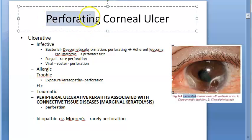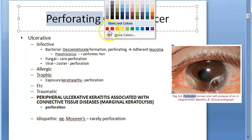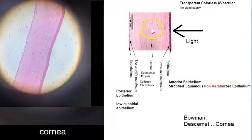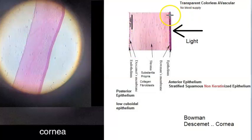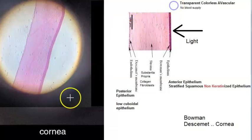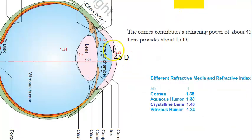In this video, let us look at perforating corneal ulcer — a corneal ulcer that has perforated. This is the cornea with all its layers shown here. There was an ulcer in the cornea — a break in the epithelium with underlying necrosis — and now this ulcer has become so deep that it has caused a perforation.